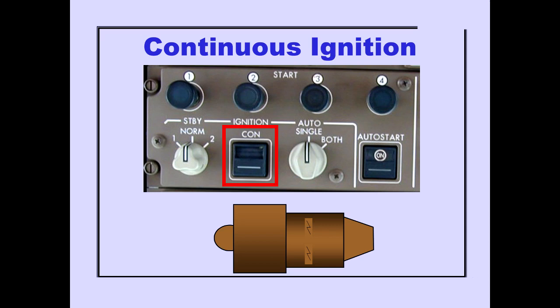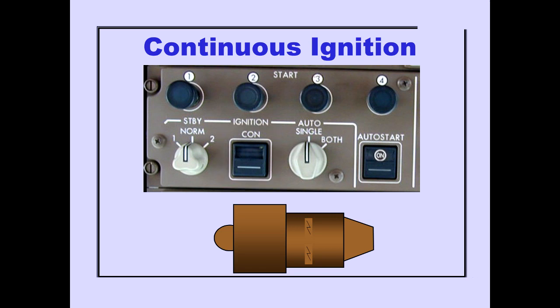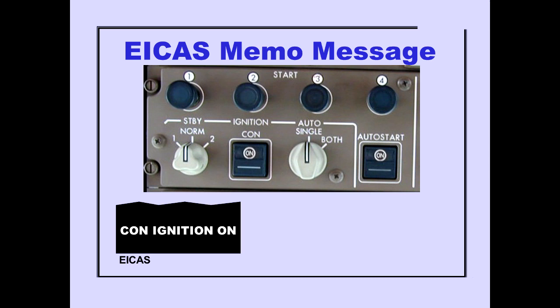Pushing the continuous ignition switch on continuously operates the igniter selected by the auto-ignition selector. The ICAS memo message, continuous ignition on, is displayed when the continuous ignition switch is on.